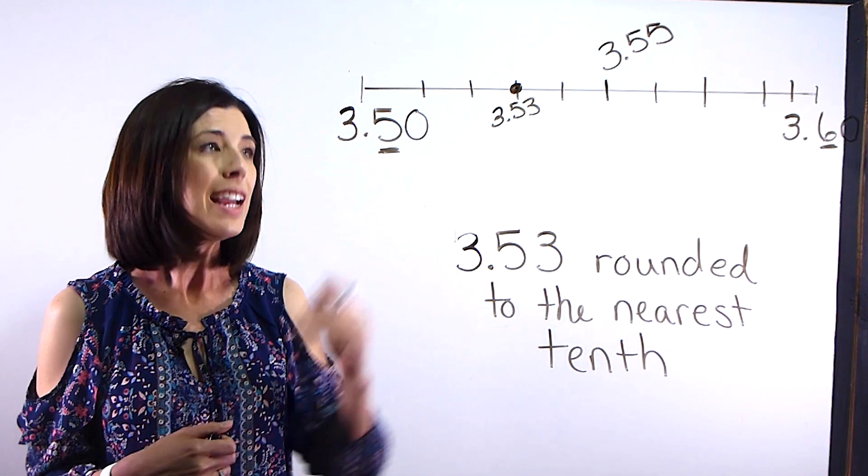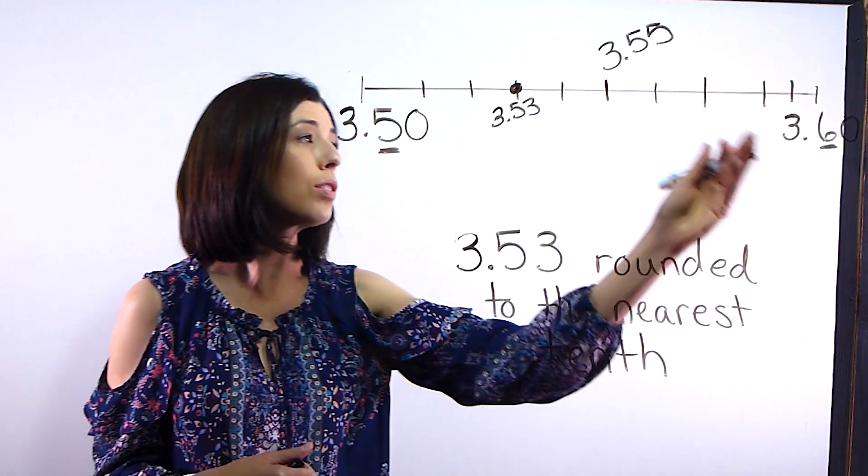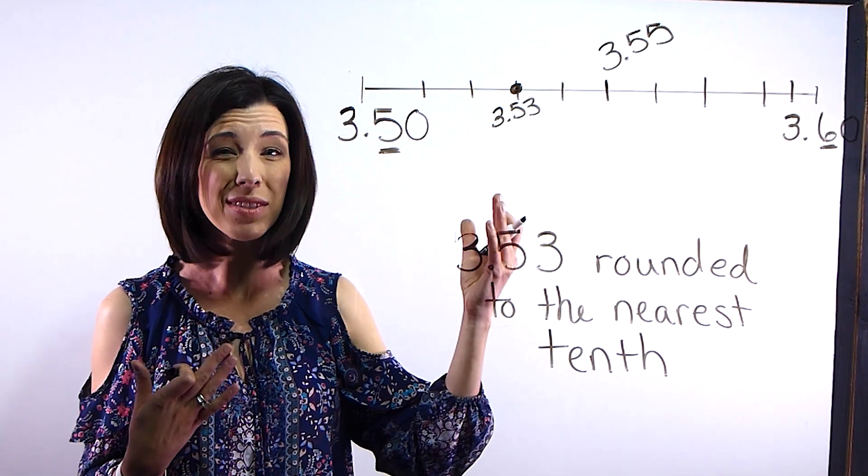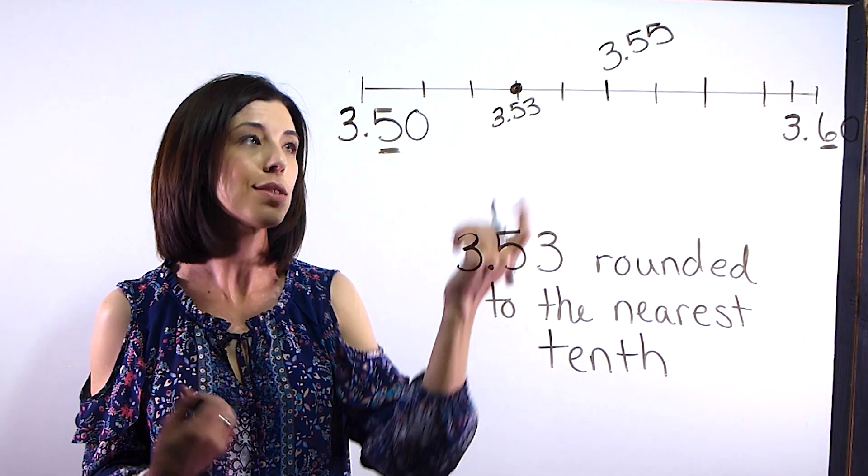Now I need to ask myself, is it closer to 3 and 50 hundredths or 3 and 60 hundredths? Or another way of saying that is, is it closer to 3 and 5 tenths or 3 and 6 tenths?